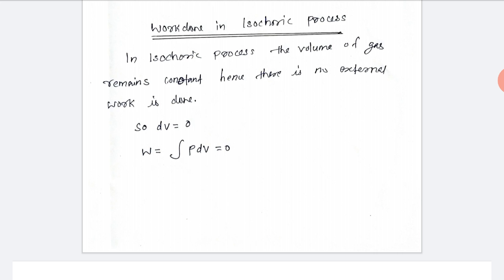In the isochoric process, if the volume change is equal to zero, then work done — the integral of P dV — is also zero.